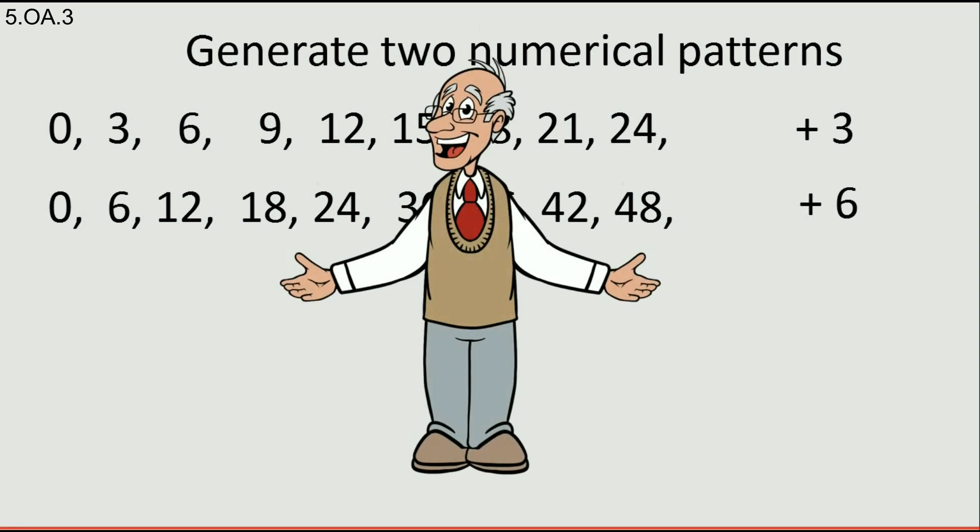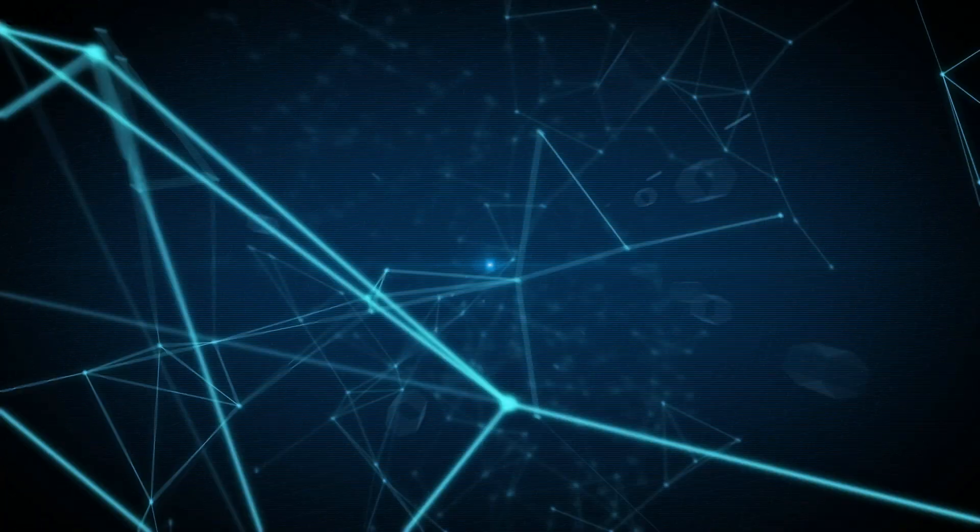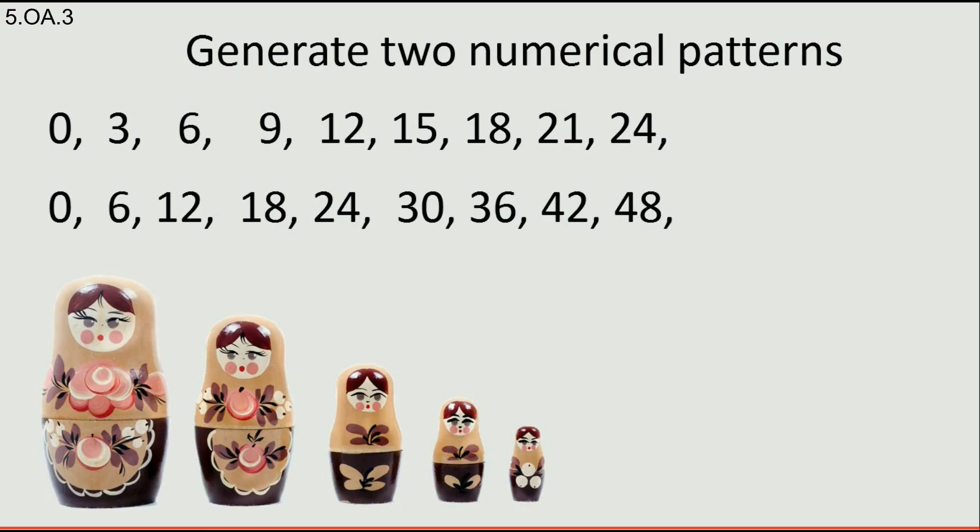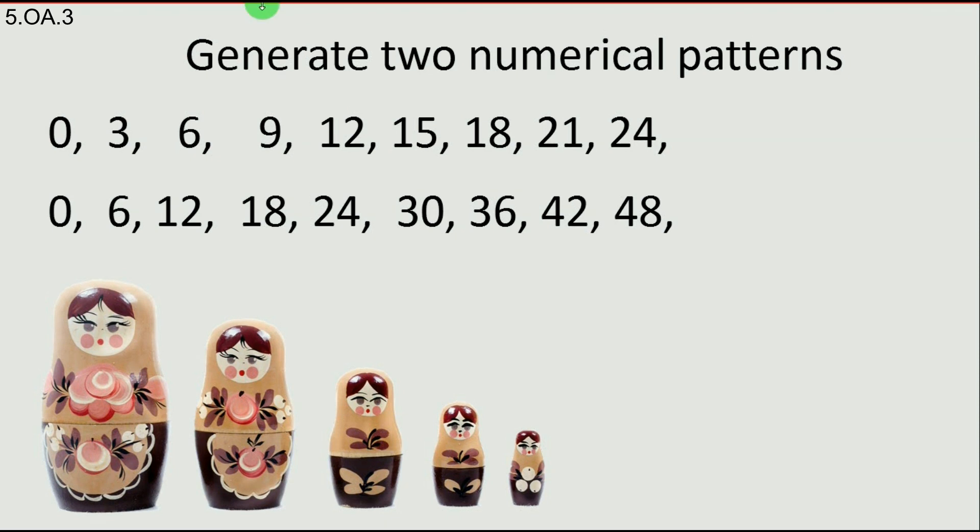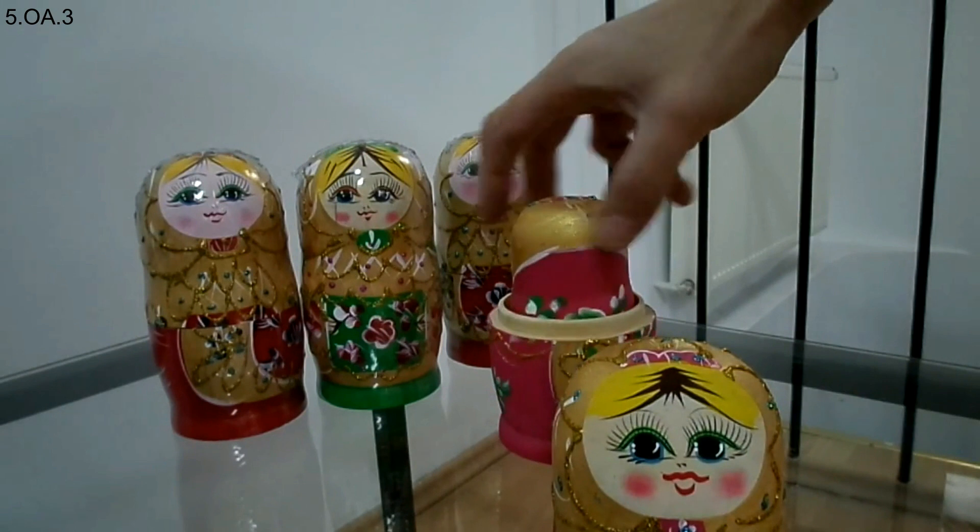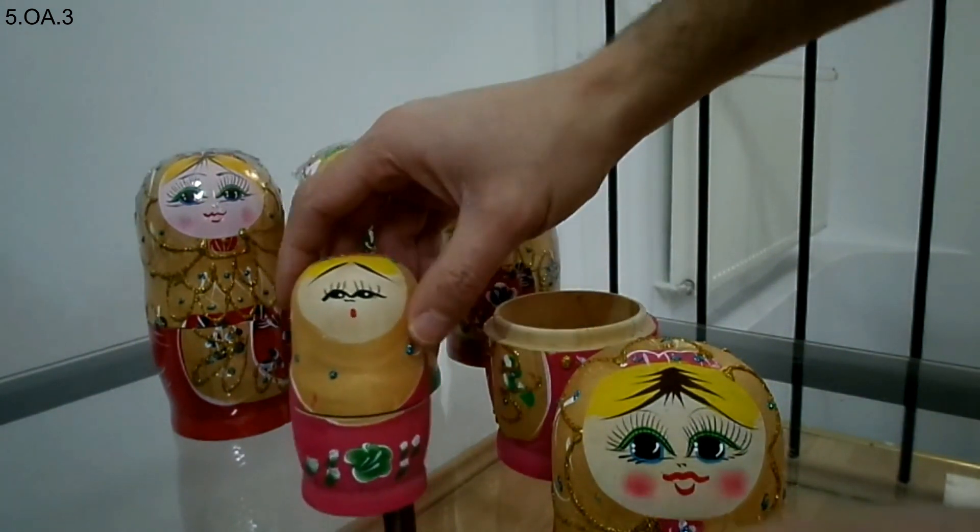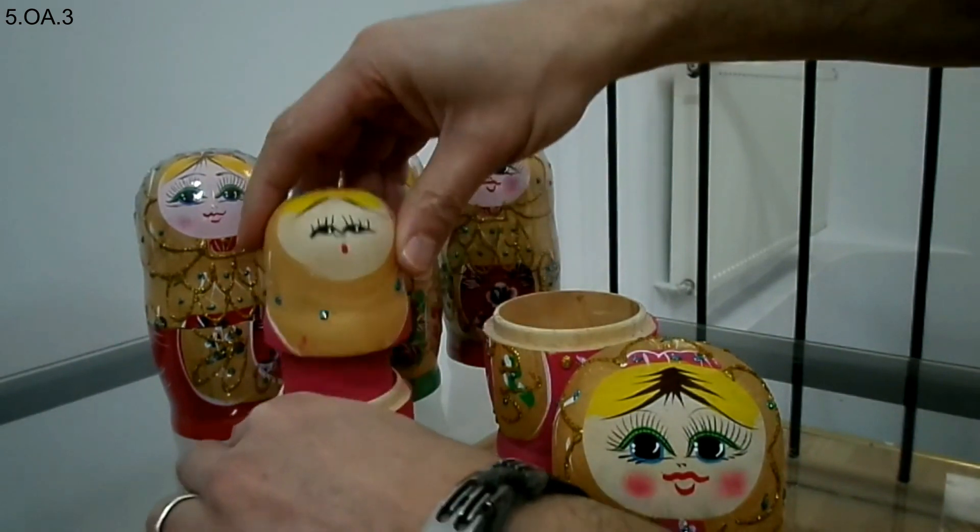Now, take a pen and a piece of paper and make those patterns again yourself. Make sure you really understand what's going on here. Pause the video now. Let's see now what other surprises hold those two patterns. Let's shorten the second pattern to make the last numbers the same. Do you know those wooden toys called matryoshka that fit one inside another? It's exactly the same with our patterns.